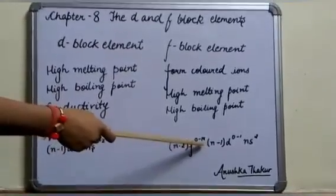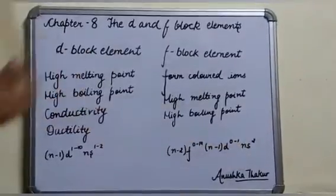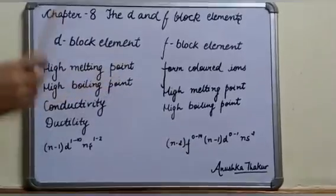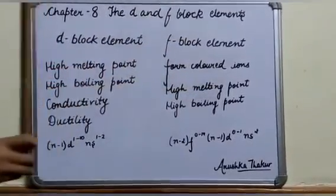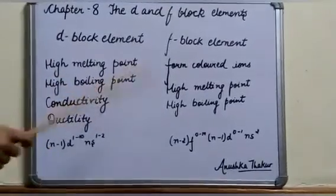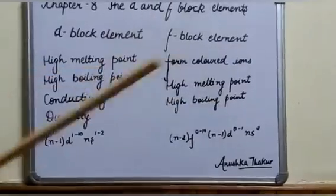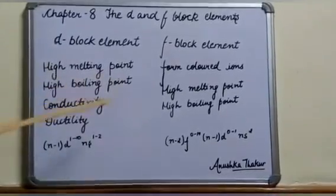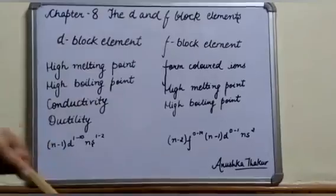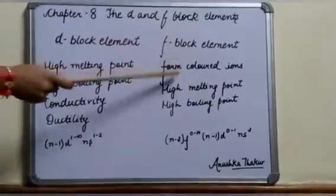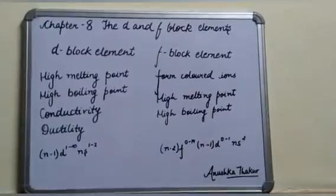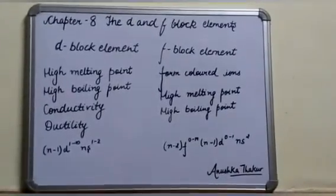The electronic configuration of f-block elements is (n-2)f⁰⁻¹⁴ (n-1)d⁰⁻¹ ns². The physical properties of d-block elements include high melting point, high boiling point — similarly f-block elements also have high melting point and high boiling point, so some physical properties are similar. D-block elements have high conductivity and high ductility, while f-block elements form colored ions.